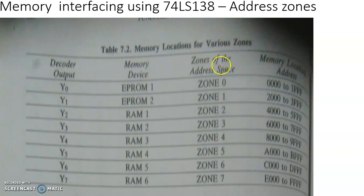So this is how a particular address zone is selected. When Y0 is selected, EPROM 1 will be enabled. That will have the first address zone, zone 0. This will be consisting of 8 kilobytes of consecutive memory locations with address 0, 0, 0, 0 to 1, F, F, F.